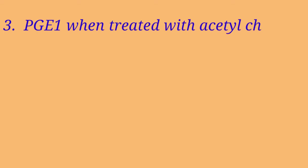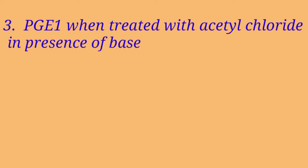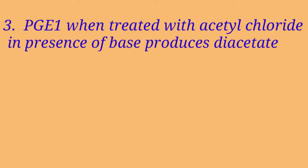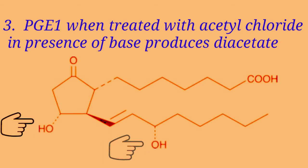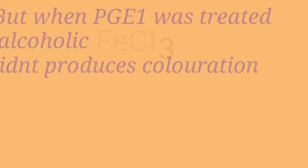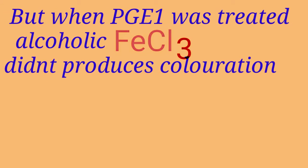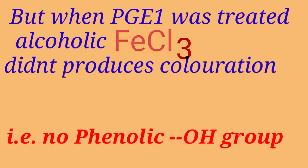PGE1 when treated with acetyl chloride in the presence of base gives a diacetate, indicating the presence of 2 hydroxyl groups in PGE1. Further, when PGE1 was treated with alcoholic FeCl3 solution it does not produce any coloration, indicating the absence of a phenolic OH group.